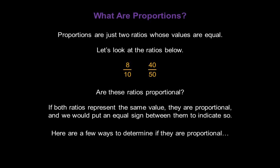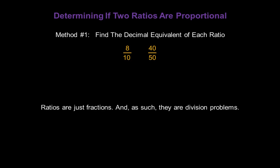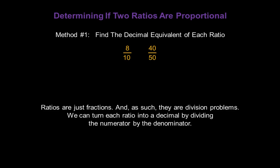Let's look at a few ways to determine if these two ratios are in fact proportional. Method number 1: we can find the decimal equivalent of each ratio. Ratios are just fractions, and as such, they are division problems. We can turn each ratio into a decimal by dividing the numerator by the denominator. Then, if the decimals are equal, the original ratios are proportional.